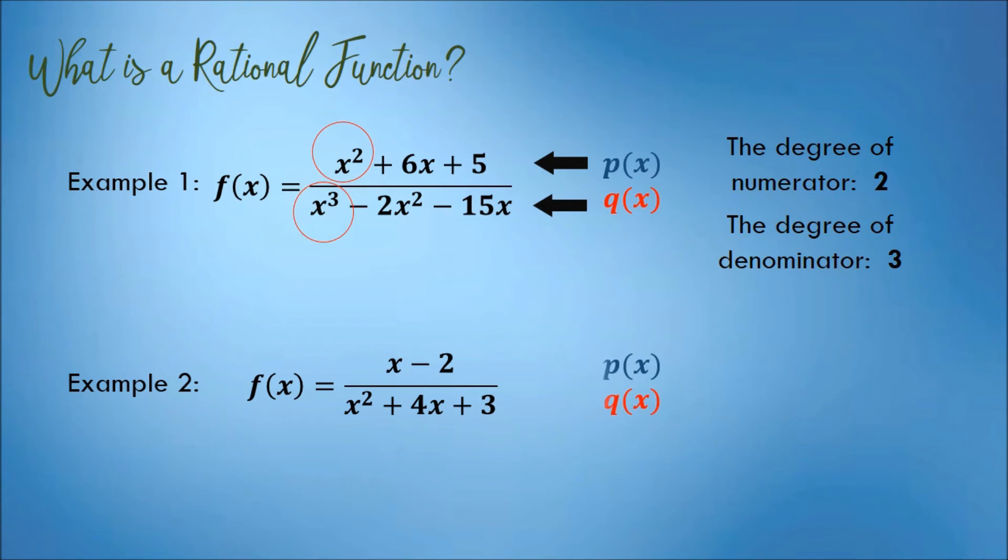This is a rational function because the numerator and denominator are both polynomial functions. The degree of the numerator is 1, while the degree of the denominator is 2.